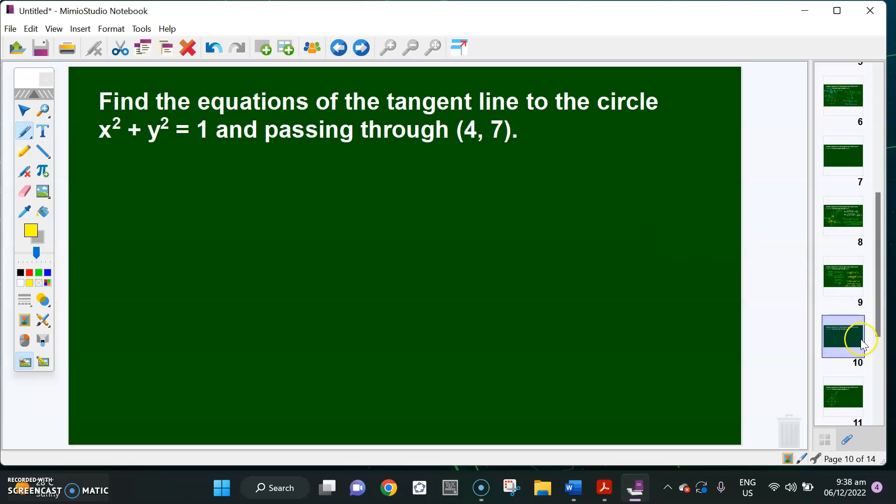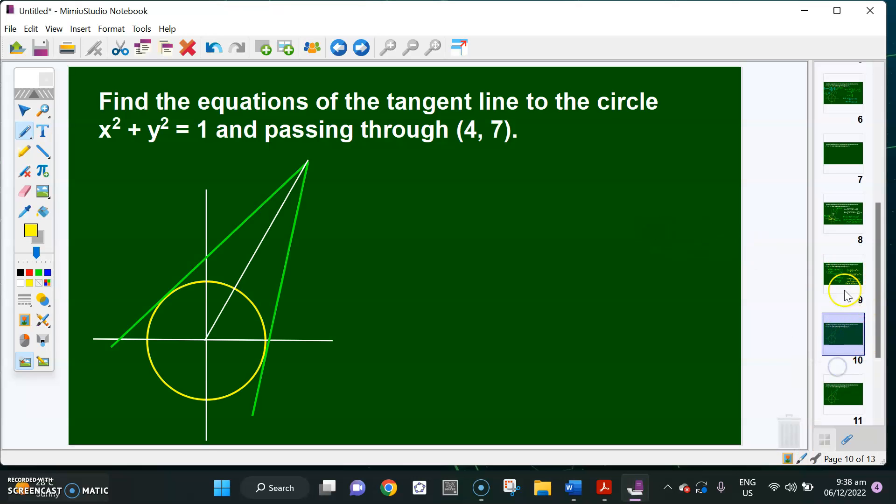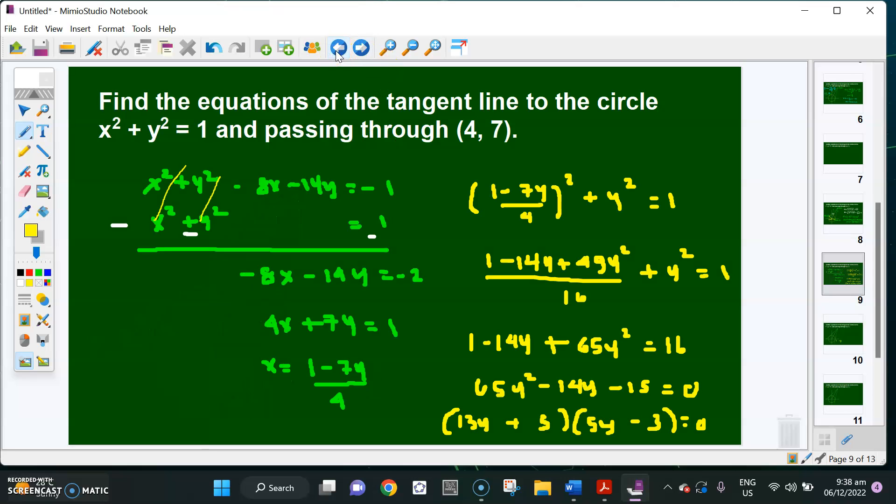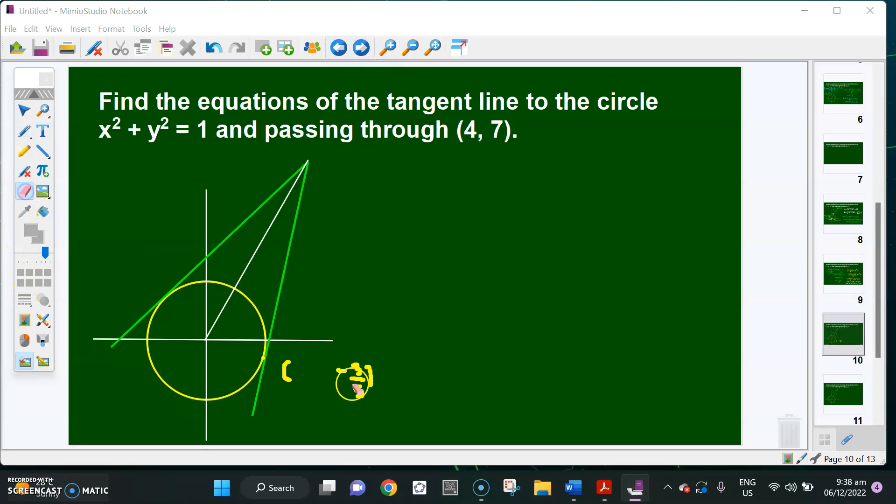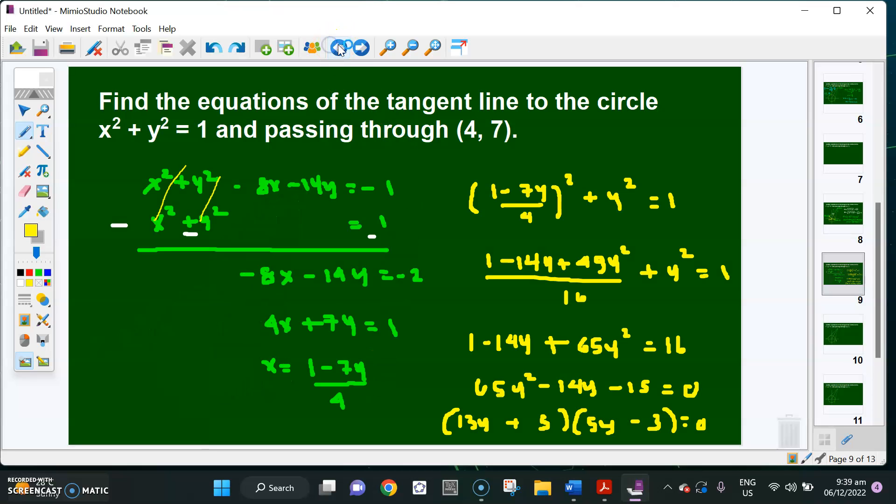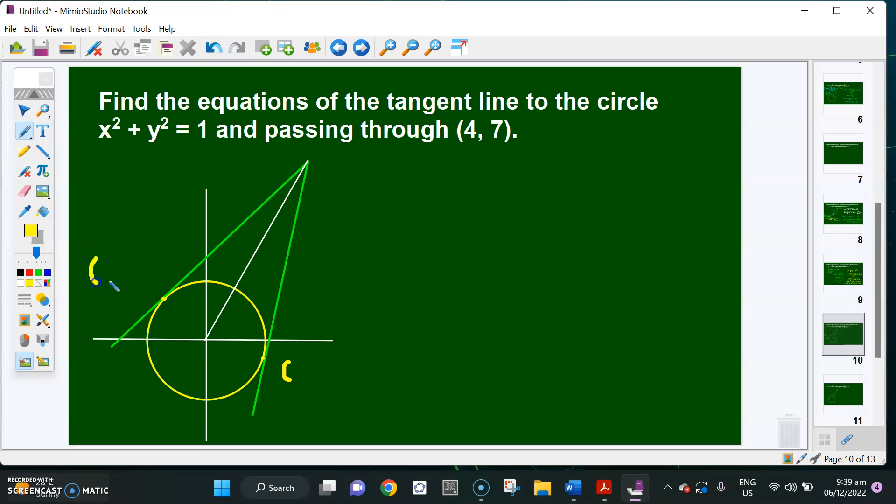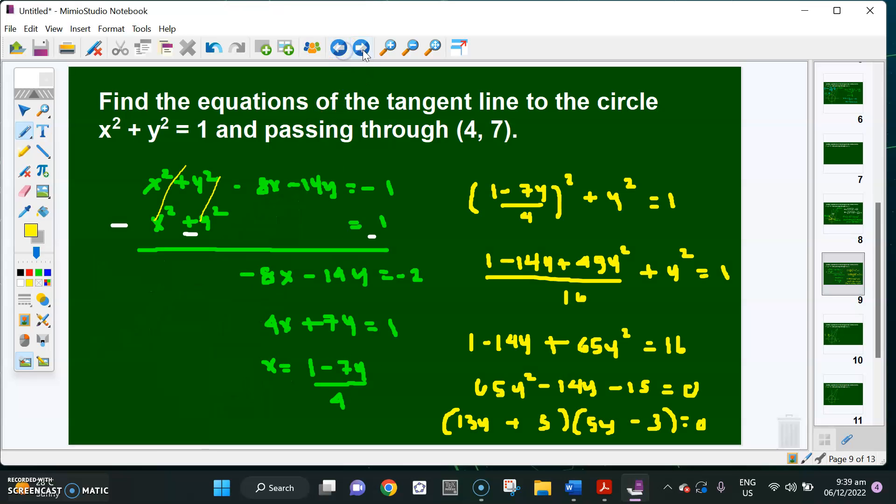Therefore, you're going to have 2 values of y. One is y equals 3/5, and the other one is y equals negative 5 over 13.